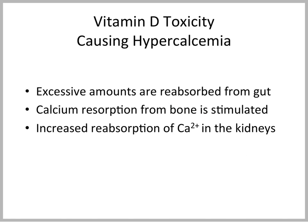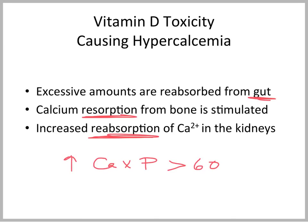Vitamin D toxicity is not uncommon, particularly in small animals. In this situation, all three tissues contribute to increased calcium: the gut increases its absorption of calcium, the bone increases its resorption of calcium, and the kidneys increase reabsorption of calcium — so all of these lead to increased ionized calcium. What we worry about is an elevation of the calcium times phosphorus solubility product. When this is greater than 60, you can get soft tissue mineralization, which leads to damage to tissues like the kidney — and once the kidney is damaged, it's difficult to recover.